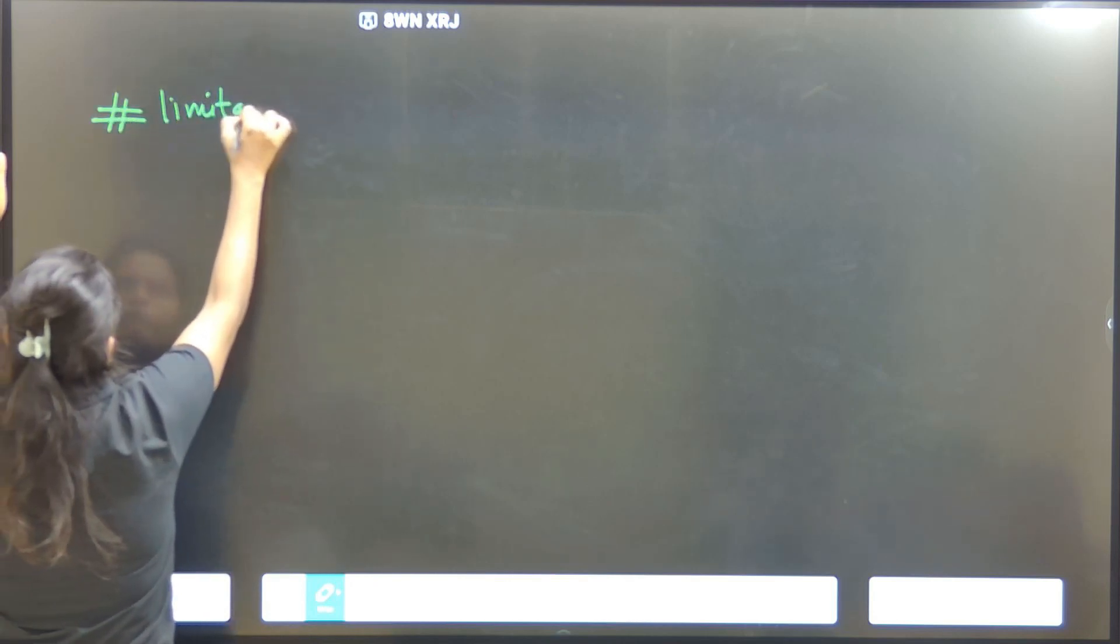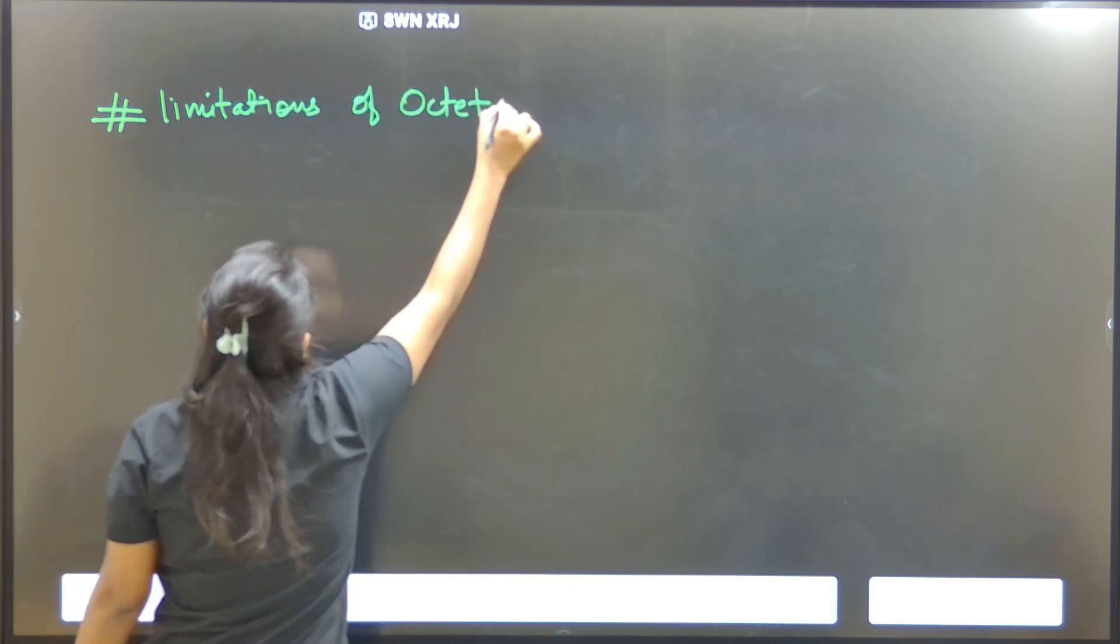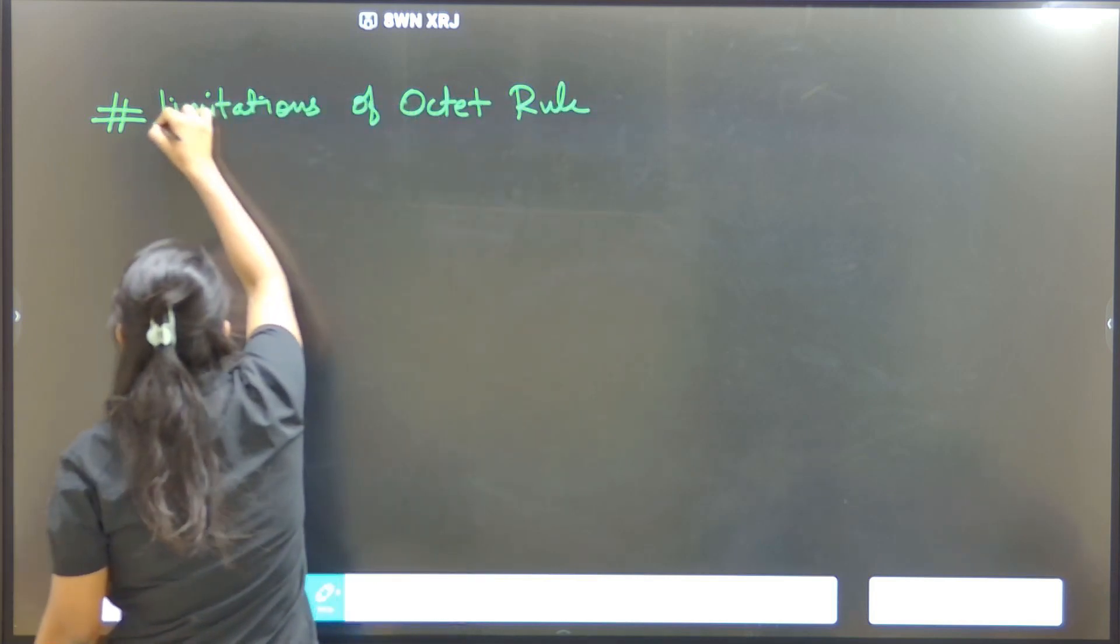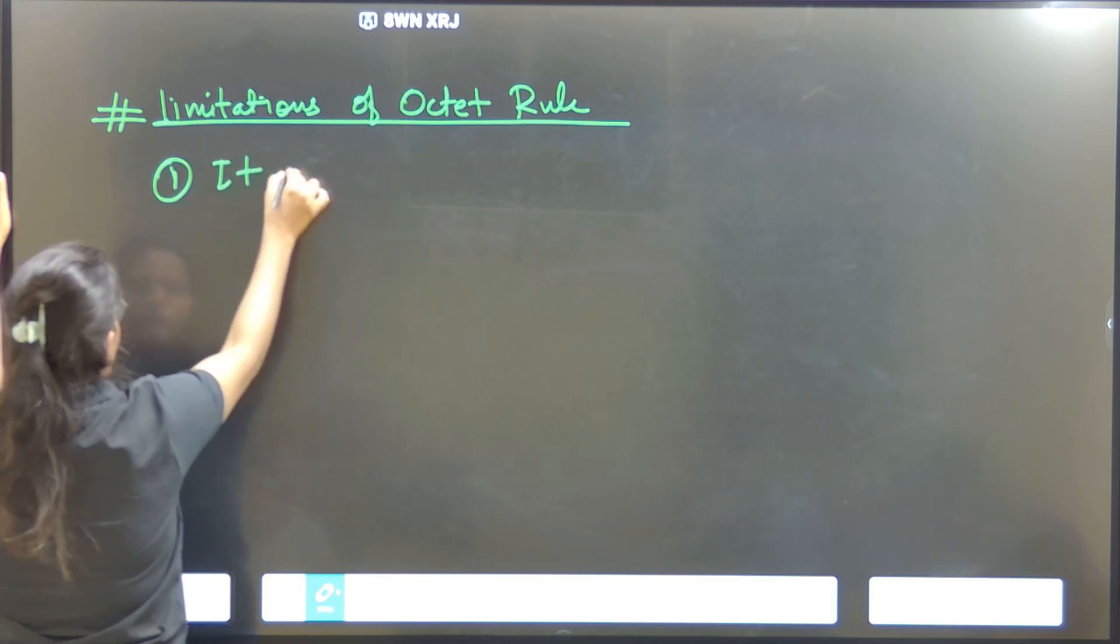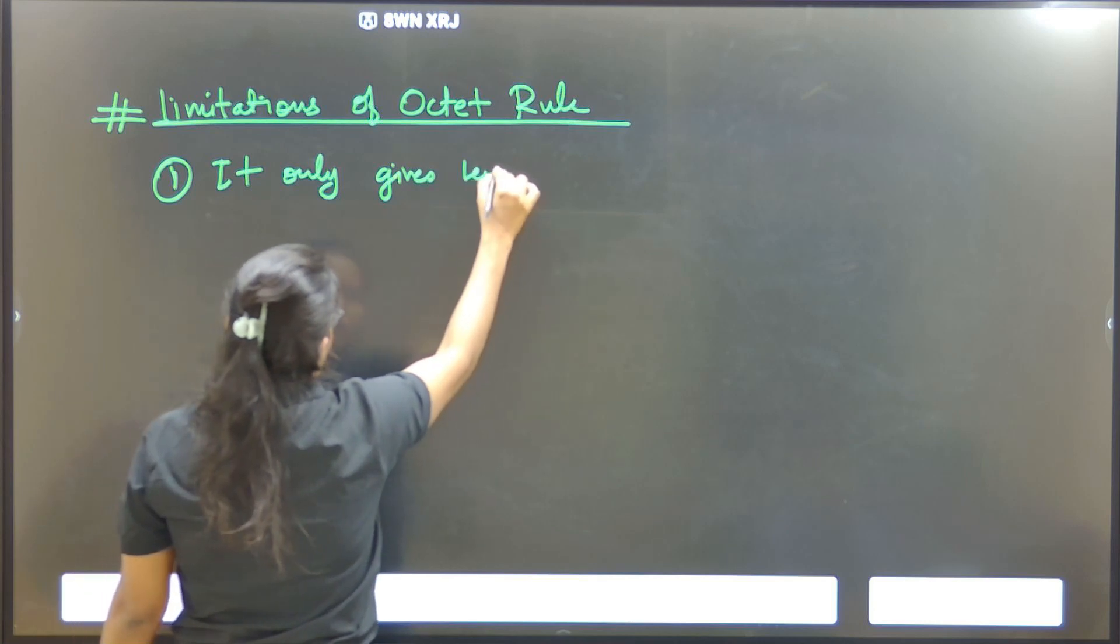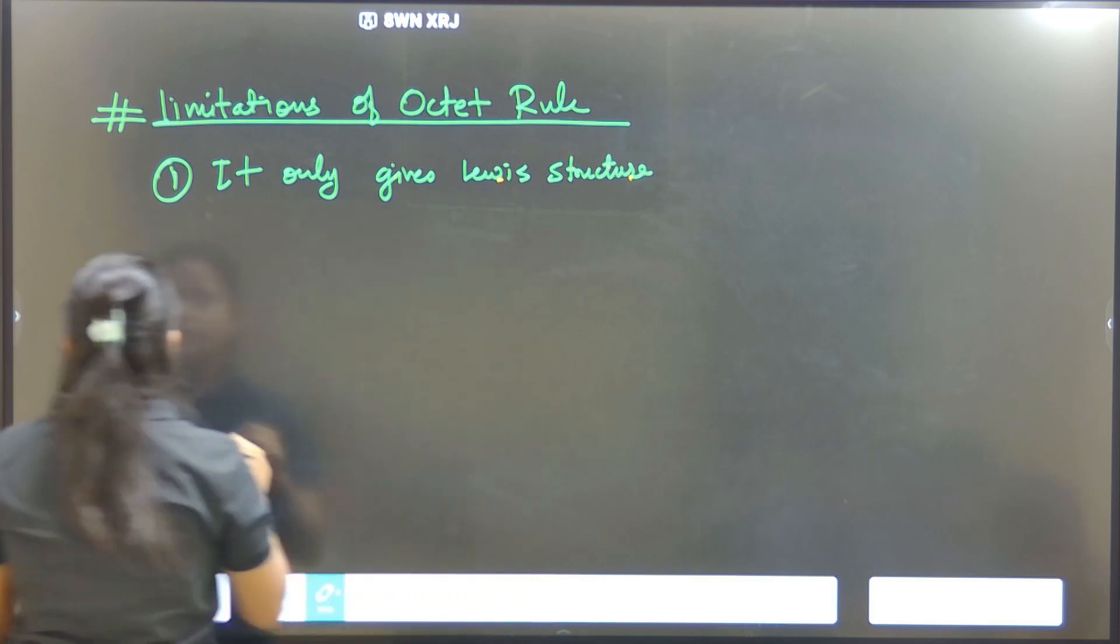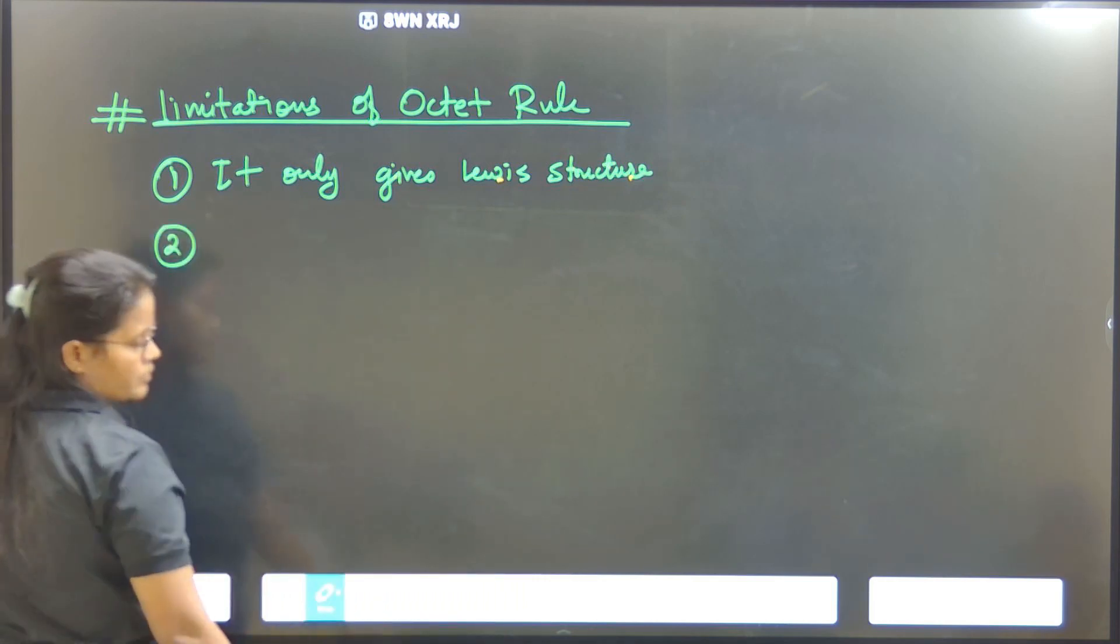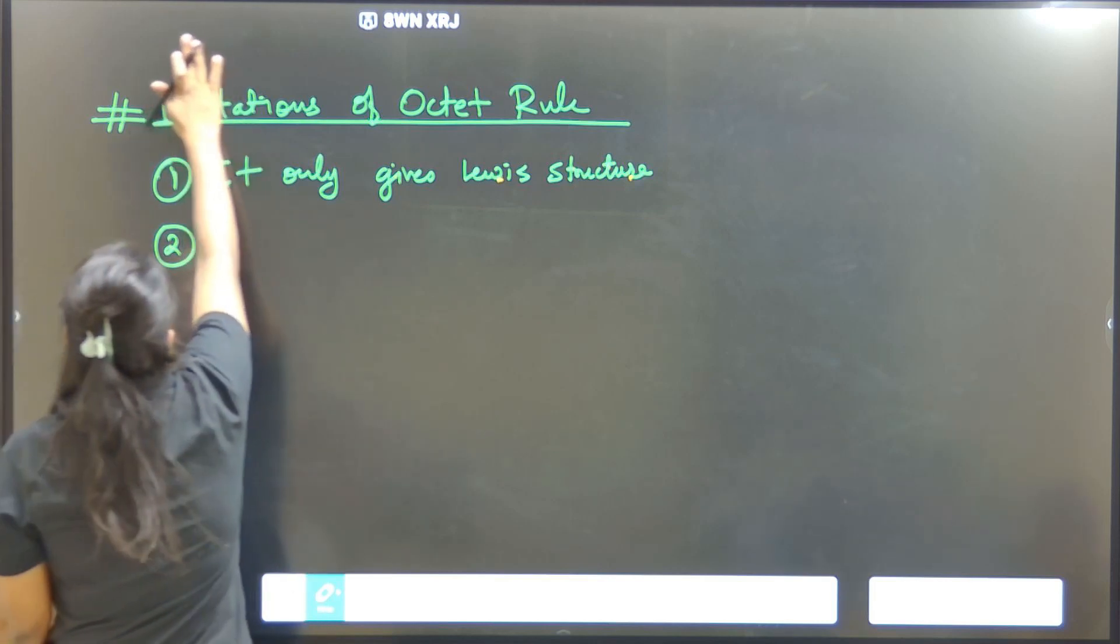Limitations of octet rule... it only gives Lewis structure. Limitations? No, here - sorry - drawbacks.